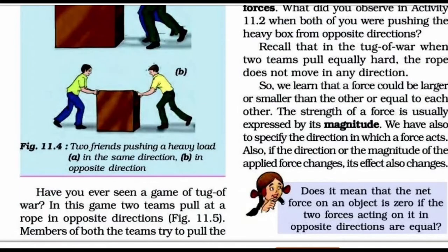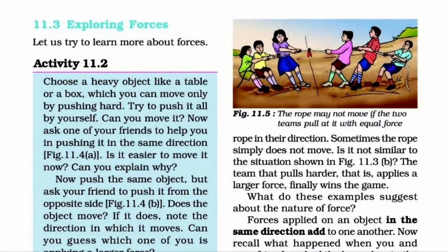Have you ever seen a game of tug of war? In this game, two teams pull the rope in opposite directions. Members of both teams try to pull the rope in their direction. Sometimes the rope simply does not move — is it not similar to the situation shown in figure 11.3b? The team that pulls harder, that is, applies a larger force, finally wins the game.